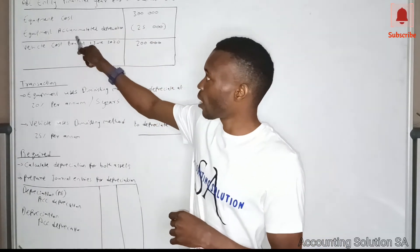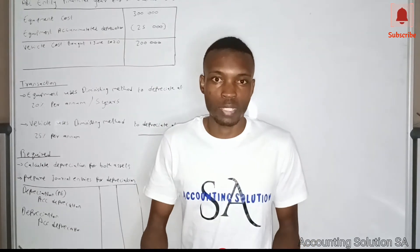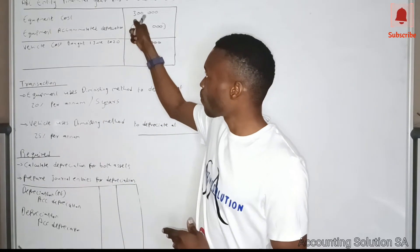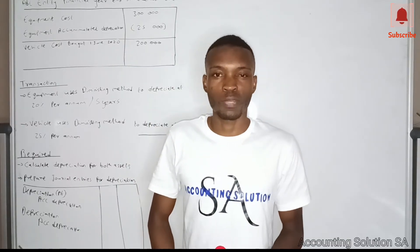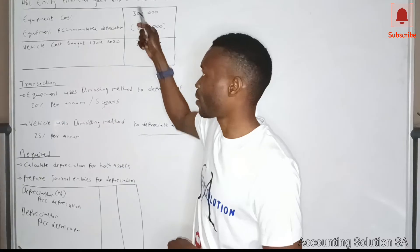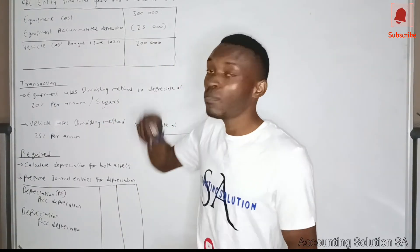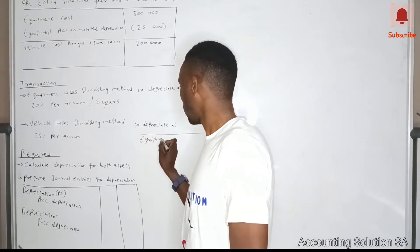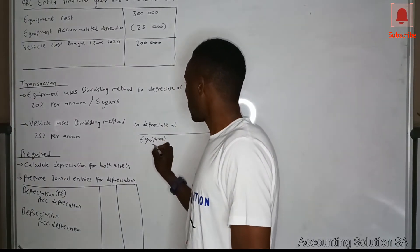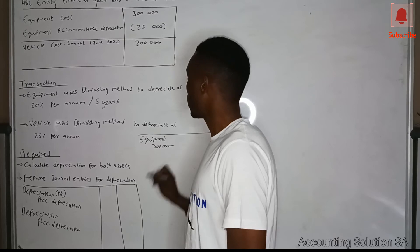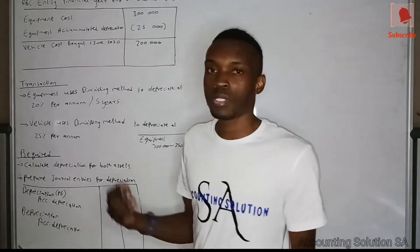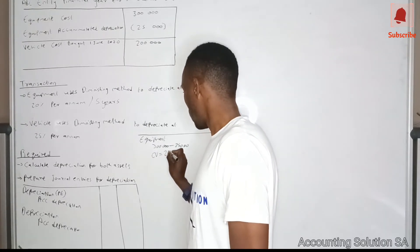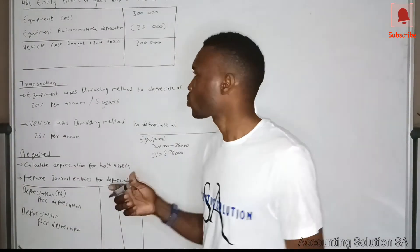Let's start with the calculation for equipment. The cost price is 300,000 and accumulated depreciation is 25,000. For the diminishing balance method, we use carrying value: cost minus accumulated depreciation. Remember, in the straight-line method we only use cost price, but here we subtract accumulated depreciation first. So: 300,000 minus 25,000 gives us a carrying value of 275,000.